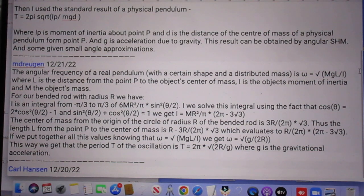The center of mass from the origin of the circle of radius R of the bended rod is 3R divided by 2 pi times the square root of 3. Thus the length L of the point P to the center of mass is R minus 3R divided by 2 pi times the square root of 3, and then he says which equals 2, and you can read that. If we put together all these values that omega equals the square root of MgL over I, we get omega is the square root of g over 2R. This way we get that the period T of the oscillation is 2 pi times the square root of 2R over G where g is the gravitational acceleration.